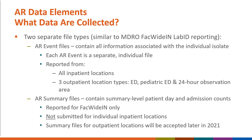The second file type submitted for the AR option is the monthly AR summary file. This file contains a summary of patient day and admissions data. As a reminder, summary files are not submitted for individual patient locations. Currently, summary files are only submitted at the FAC-wide IN level, but later in 2021, the application will also begin accepting summary files for outpatient locations — the emergency department, pediatric emergency department, and 24-hour observation outpatient location.